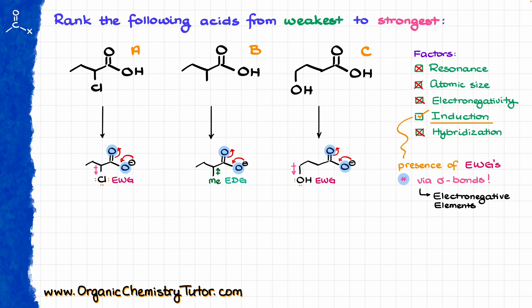But on top of being electronegative elements, the other thing that does matter here is the distance. The closer your group is to the place where the negative charge is, the stronger the inductive effect is going to be felt. If I look at both of my molecules with electron-withdrawing groups, the chlorine is on the second carbon from my carboxylate and from where the negative charge is, while the oxygen in the OH is on the fourth atom away from my negatively charged oxygens and the carboxylate. Every extra bond that takes our electron-withdrawing group further away from where the negative charge is is going to be very significant — the further away that group, the less influence it's going to exhibit on our molecule, and it will not be able to stabilize that negative charge via induction effectively.